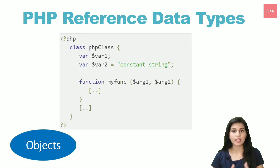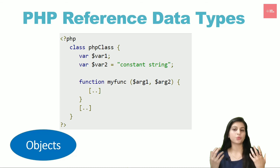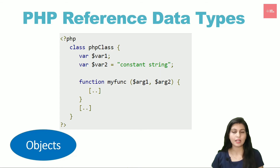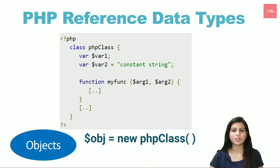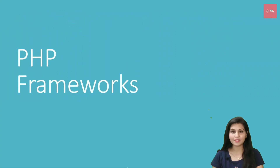Another reference data type is objects, related to object-oriented programming. You need to create a class, as shown in the example — we create a simple class, declare variables inside it, and can have functions with arguments. Object creation is really simple: you simply use the new operator.